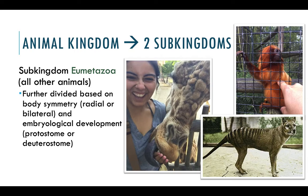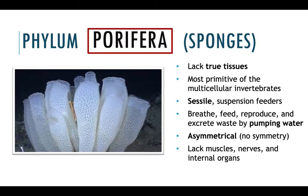So here you can see me with a giraffe and a monkey, and there's my favorite animal, a thylacine, which are now extinct because we hunted them out in the 1940s — really sad. So phylum Porifera — our sponges. What you need to know is that they lack true tissues, they are the most primitive multicellular invertebrates, and they're sessile so they don't move around. They breathe, feed, reproduce, and excrete waste by pumping water. They're also asymmetrical — absolutely no symmetry — and they don't have any muscles, nerves, or internal organs at all.